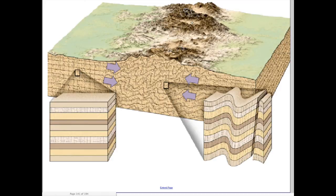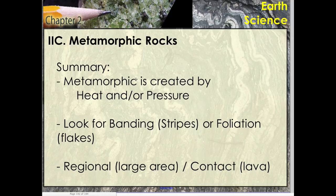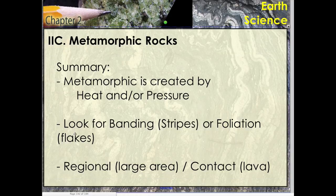Overall, metamorphic rocks are created by heat and pressure. Look for banding, which looks like stripes, or foliation, which looks like flakes. Regional metamorphism covers a huge area, while contact metamorphism results from direct contact with lava. That's the quick review of metamorphism — there are of course more facts in your book and notes, so read up, study, and good luck.